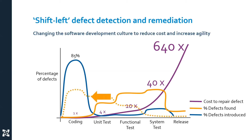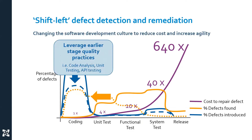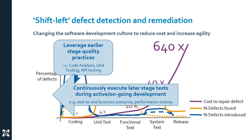We want to find and remove defects as early as possible. So what we focus on is shifting left the identification of those defects earlier in the SDLC by leveraging earlier stage quality practices such as deep code analysis, and taking tests created during the later stages — like functional and performance tests — and executing them continuously as new capabilities are added to the application. Essentially doing regression testing continuously.